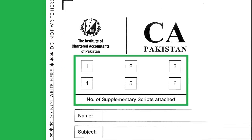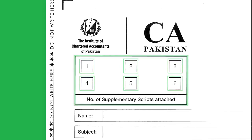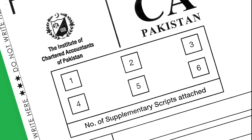Just below the ICAP logo there is a box with six sub-boxes. Here you will tick the relevant sub-box whenever you take any supplementary script. For example, on taking the first supplementary script you should tick sub-box one, on taking the second supplementary script you should tick sub-box two, and so on.